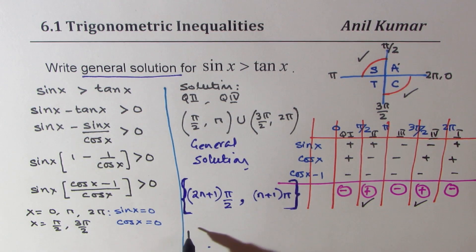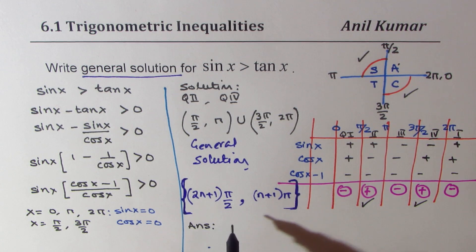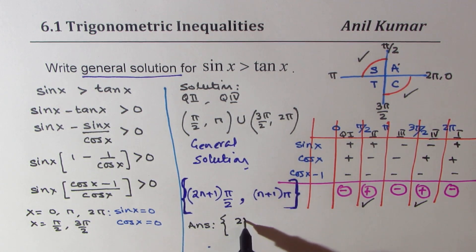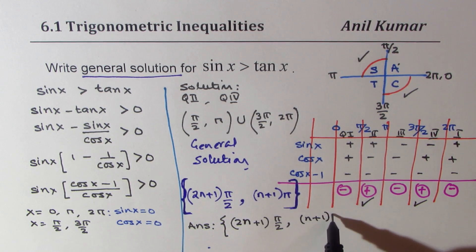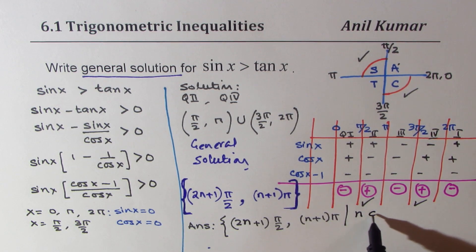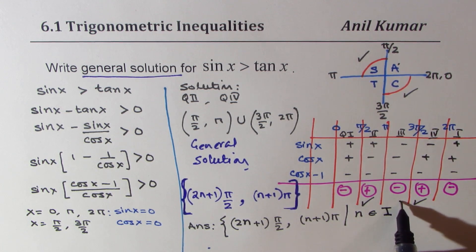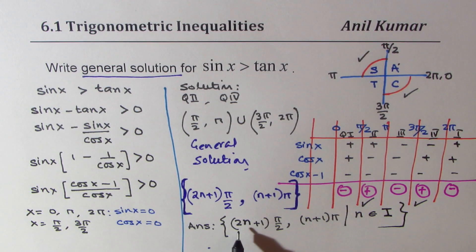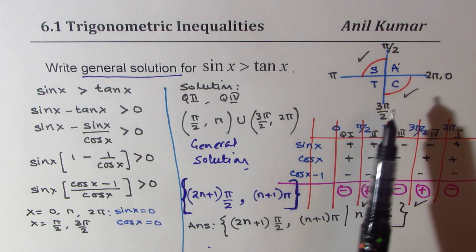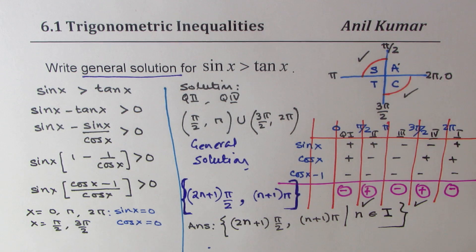So now, let me write down the answer in proper way. So the solution will be, from (2n plus 1) pi by 2, to (n plus 1) pi, where n belongs to integers. You can write i or z as you wish. So that is the interval in which sin x is greater than tan x. So broadly speaking, it is in quadrant 2 and in quadrant 4 that sin x is greater than tan x. So I hope the concept is absolutely clear. Feel free to write your comments and share your views. And if you like and subscribe to my videos, that would be great. Thanks for watching and all the best.